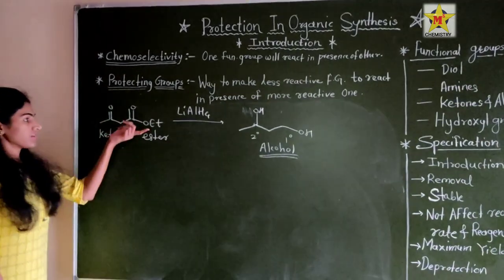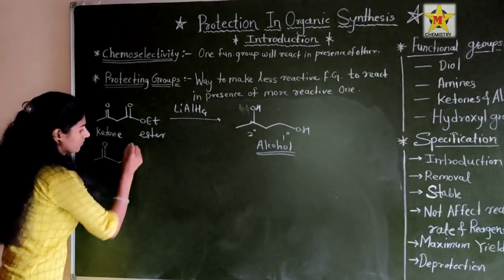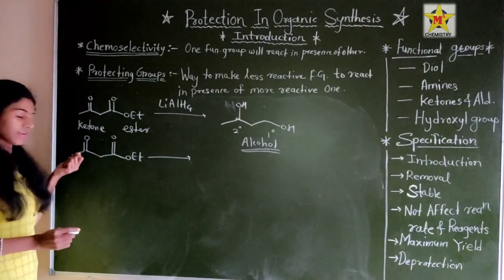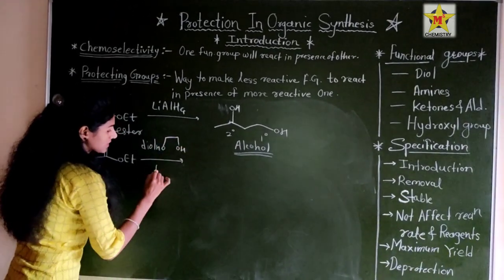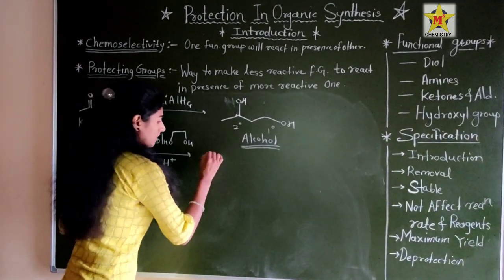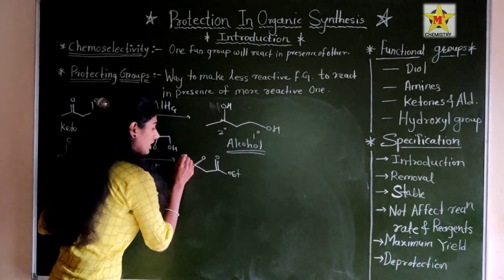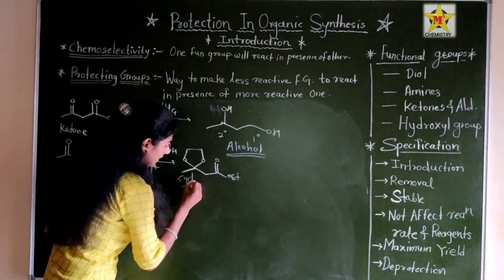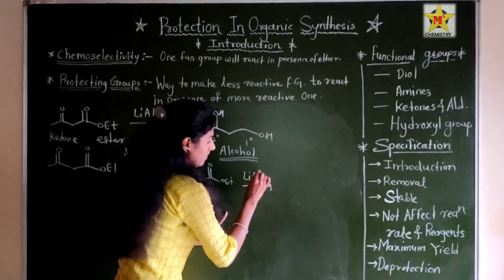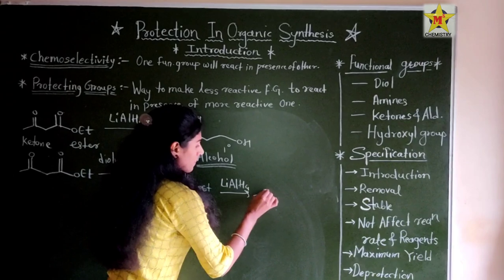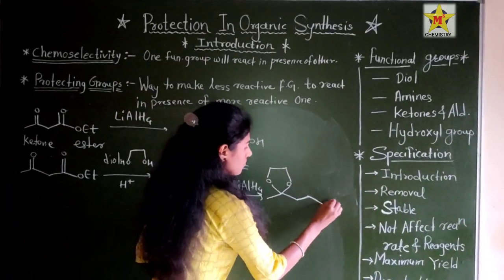But if I want to protect only the ketone functional group, I will react it with a diol in the presence of H⁺. This forms a cyclic acetal — the ketone group is protected as a cyclic ketal. The ester group remains as it is. Now when we apply LiAlH₄ over this compound, the cyclic ketal group remains intact and only the ester is reduced, giving a primary alcohol.